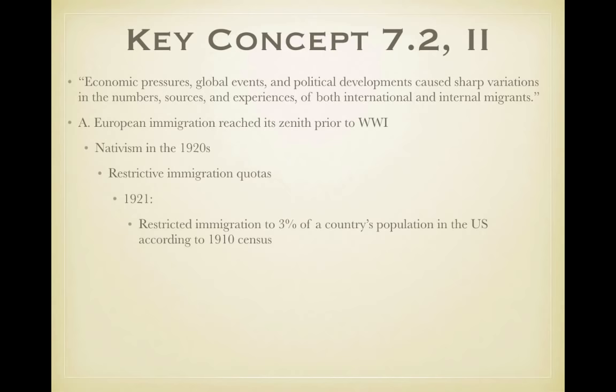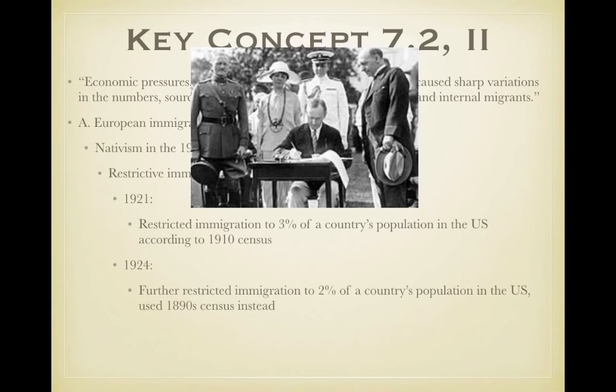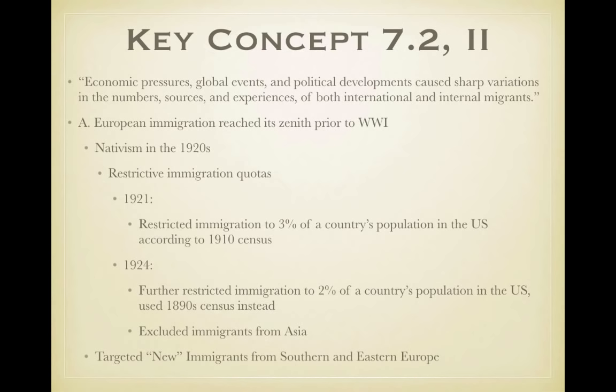Three years later, Calvin Coolidge signed the National Origins Act of 1924, further restricting immigration to two percent of a country's population based on the 1890 census. This act also flatly excluded immigrants from Asia — so in addition to targeting new immigrants from southern and eastern Europe, it outright barred Asian immigrants.